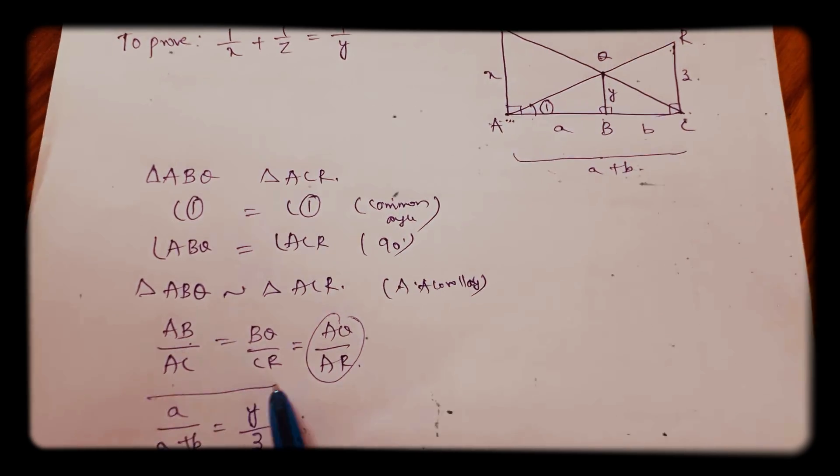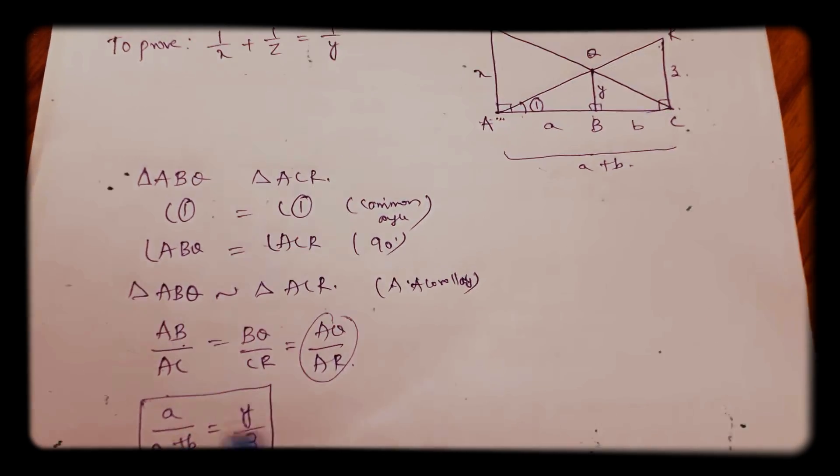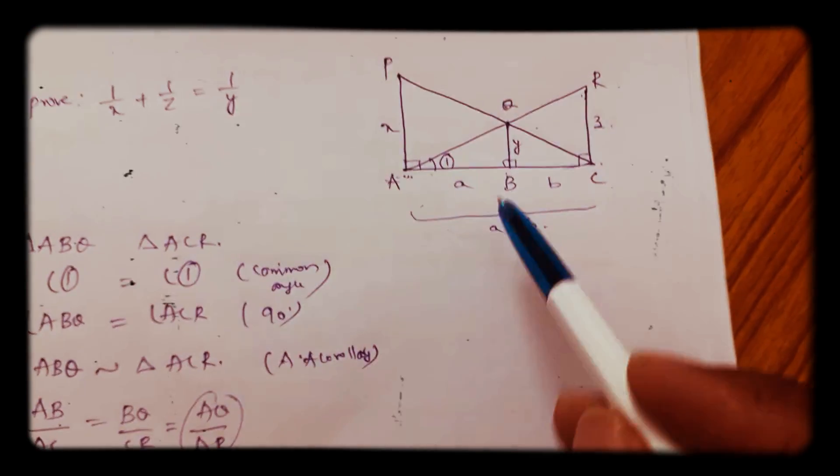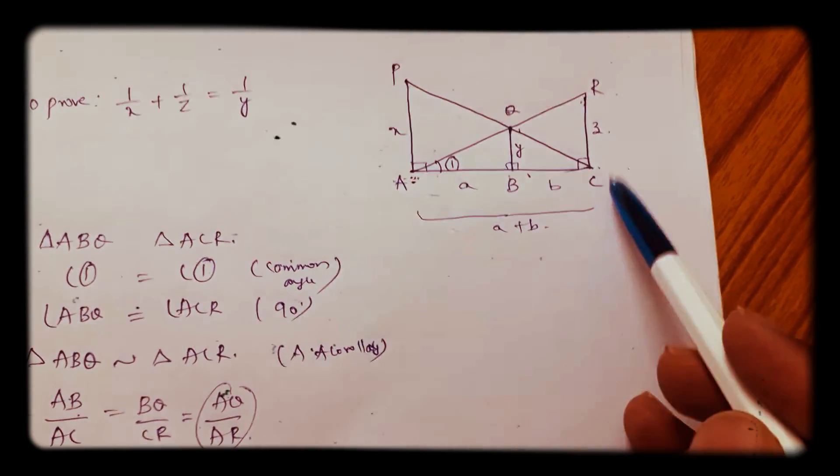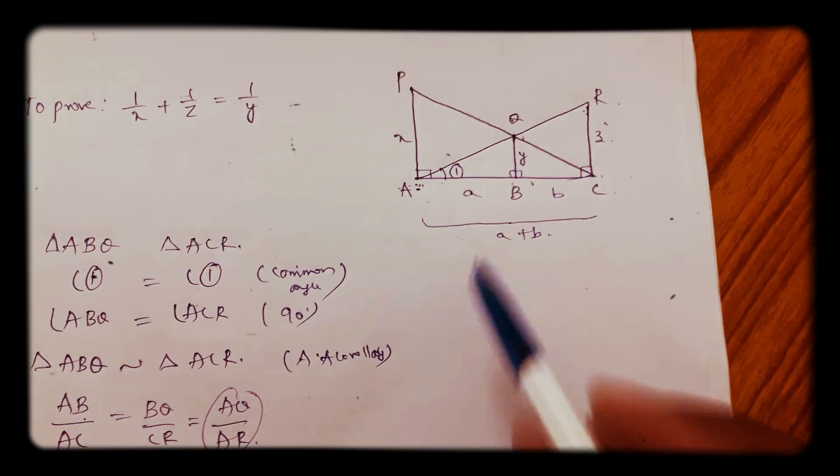Now, we just started from ABQ and ACR. Now start from C. Take triangle CBQ and CAP.